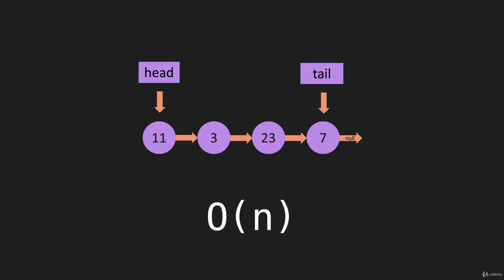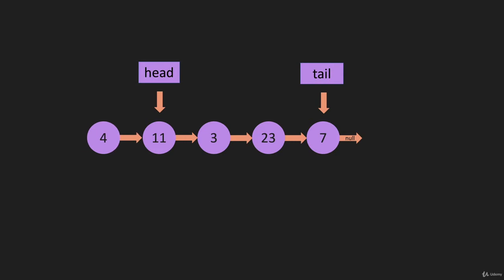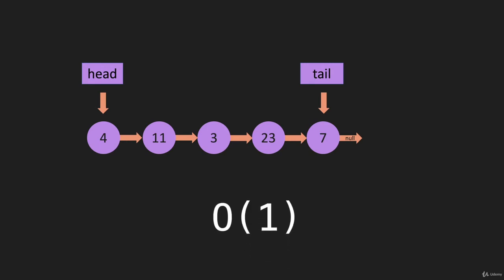Now let's look at doing this on the other end. We bring the four node over here — we need the four to point to the 11 node. We do have something already pointing at the 11 node, which is head. So we set the pointer from the four node equal to the pointer from head, pointing the four at that node. Then we just set head equal to the new node. That's O(1).